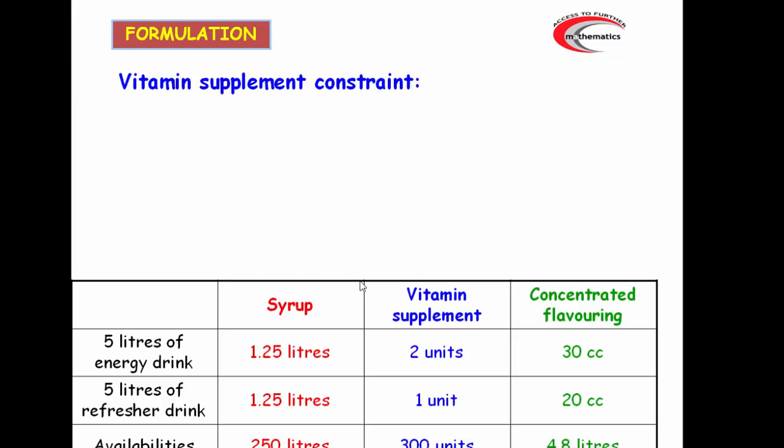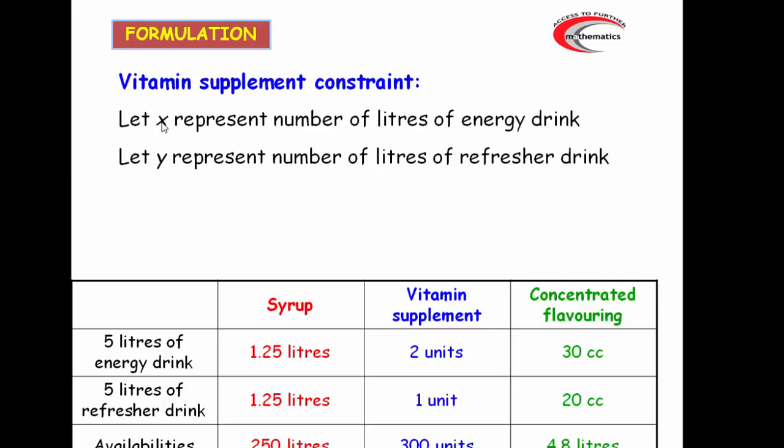Second constraint, the next column, vitamin supplement. We can work in units, there's no problem with that. But again, remember that it's two units for every five litres. And our decision variables are for one litre and again for one litre. So x is the number of litres of energy drink, not the number of units of five litres. So the amount of vitamin supplements would be two divided by five, so 0.4 times x, where x is the number of litres of energy drink. We need two units for five litres. So 0.4x plus 0.2y is less than or equal to our limit of 300 units.